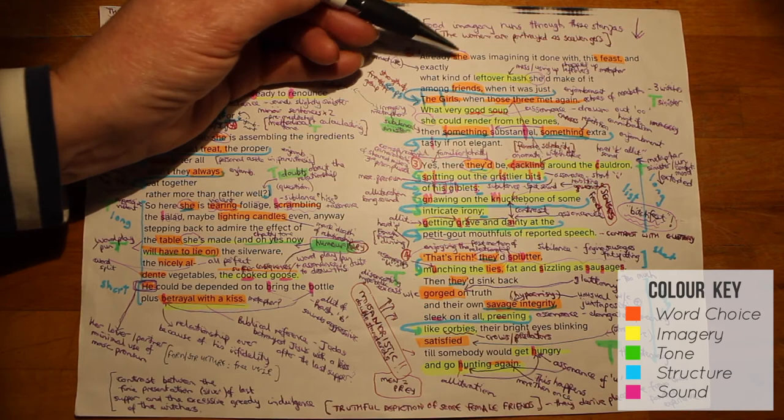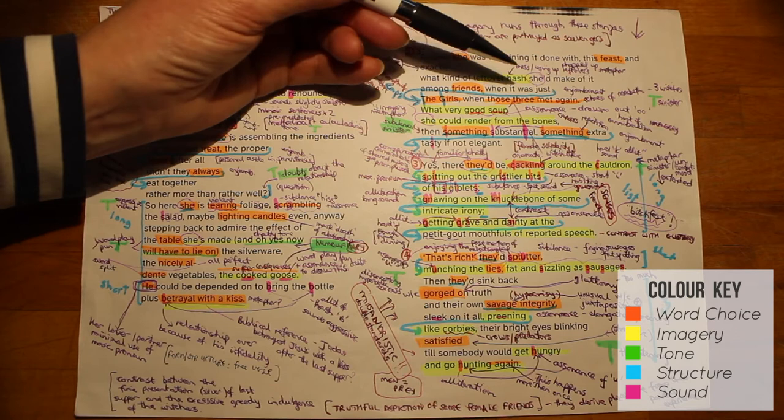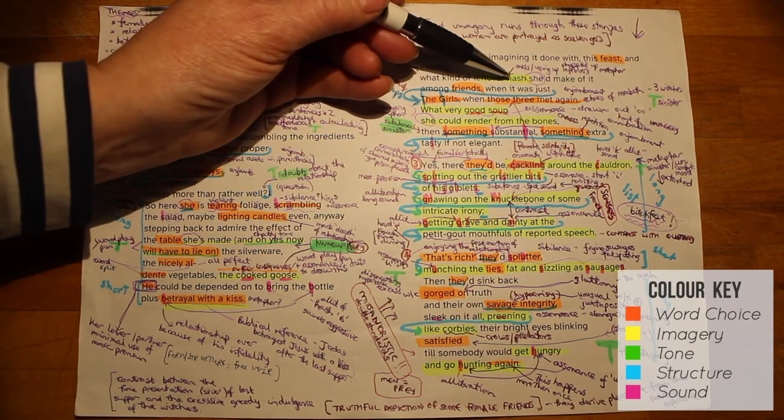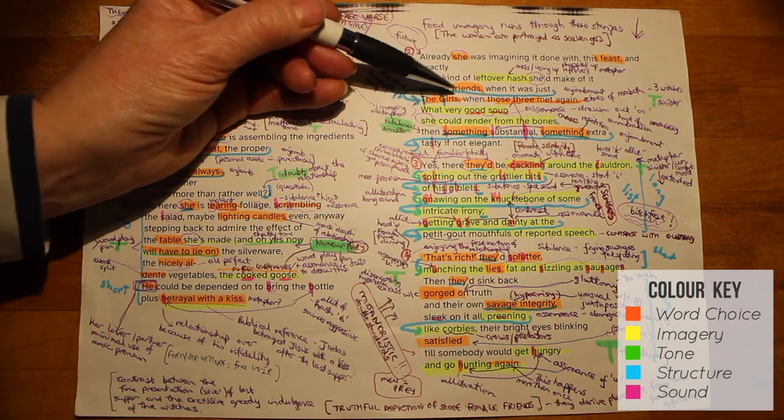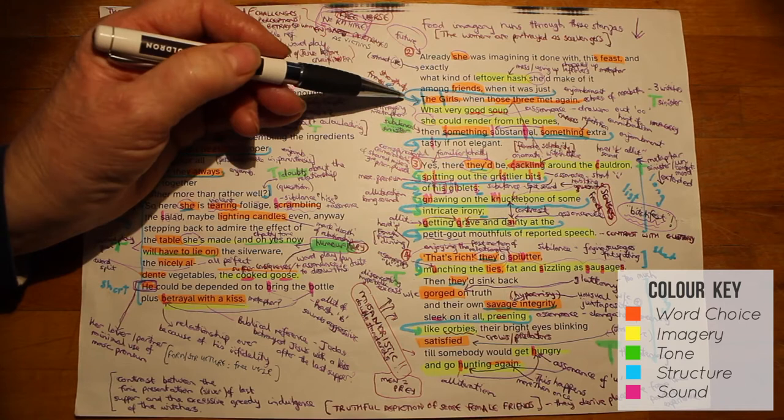Already she, the wronged persona, was imagining it done with, this feast. Now feast takes us back to the reference to feast earlier on. The persona is already thinking ahead to what it will be like once this meal, where she is going to ditch her lover is over, and the leftover hash, that's a sort of mess when you've got leftovers, that she would make of it when she's discussing the whole situation with her friends. When it was just, and the word choice of, the girls. So a group of her close friends, and the capital T and capital G here really draws attention to the strength of that friendship group.